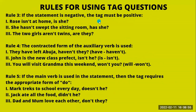Rule number three: if the statement is negative, the tag must be positive. 'Rose isn't at home' is a negative statement — 'is she' is a positive tag. 'She hasn't swept the sitting room' is a negative statement — 'has she' is a positive tag. Where you have a positive statement, you have a negative tag; and where you have a negative statement, you must have a positive tag. Example: 'The two girls aren't twins' is a negative statement — 'are they?' is a positive tag.